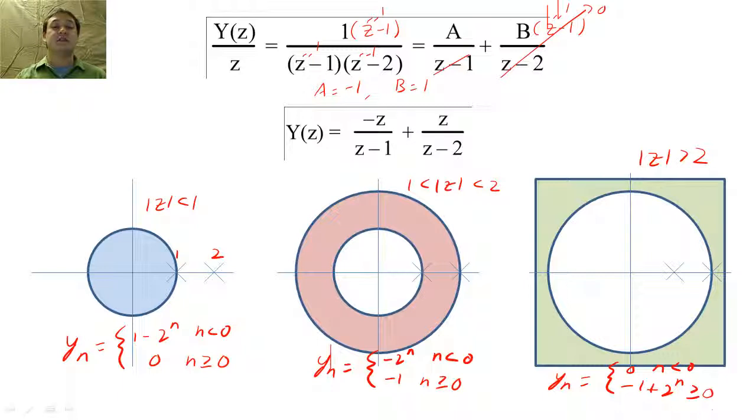From this exercise, we see that we cannot invert the Z transform unless we are told the ROC.